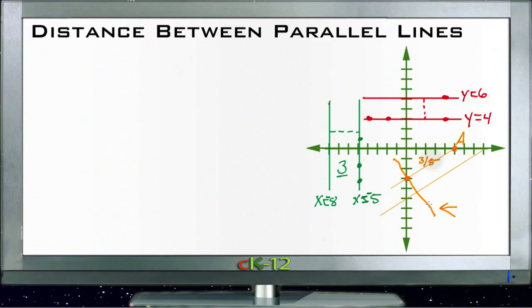Then the perpendicular line would be negative 5/3. We just draw that line in, find out where it crosses right here, and then we can figure out using the Pythagorean theorem exactly how far it is between these two lines.